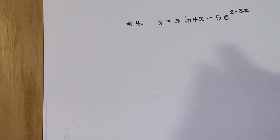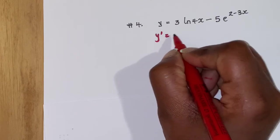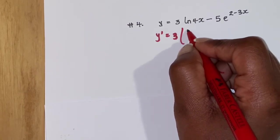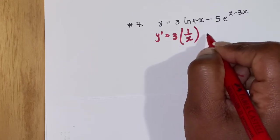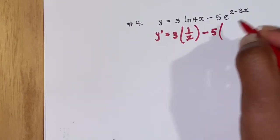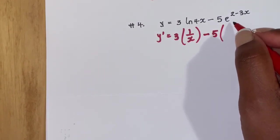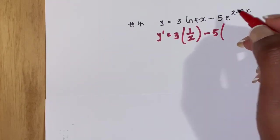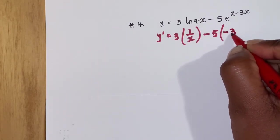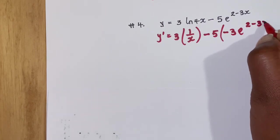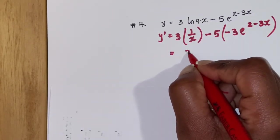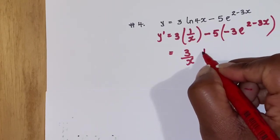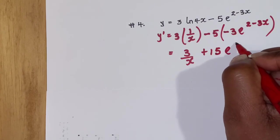Question 4: differentiating 3·ln(4x) minus 5e to the (2 − 3x). For ln(4x), the answer gets multiplied by the 3 outside: ln(4x) gives 1 over x, so that part is 3 over x. On the other side, e to the (2 − 3x) is in the form e to the (ax + b) with a = −3, giving −3e to the (2 − 3x), multiplied by −5 outside. Negative 5 times negative 3 is positive 15. Final answer: 3 over x + 15e to the (2 − 3x).